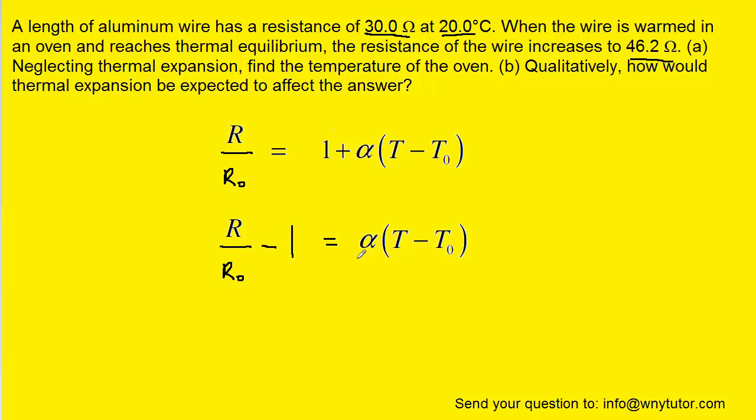We could then divide both sides of the equation by alpha so that it cancels out on the right-hand side. And then finally, we can add T-naught to both sides of the equation. So we have successfully solved the equation for this temperature, T, that we're looking for.